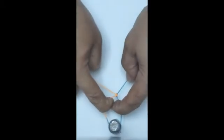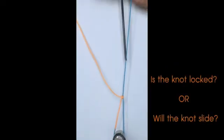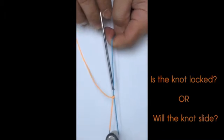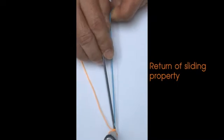The same principle can be used in case of premature locking. Simple tension on the post or the blue limb will easily return the sliding property to the knot.